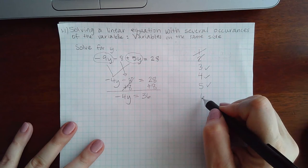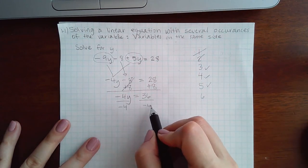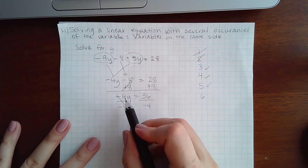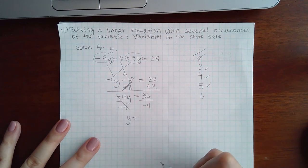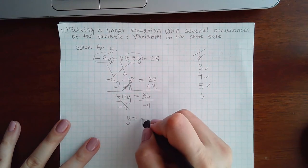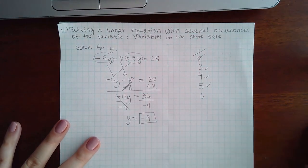Then the last step is to divide by the coefficient. So I'm going to divide both sides by negative 4 so that the entire number and sign cancels, and I end up with just y all by itself. Now 36 divided by negative 4 is negative 9, and that is the answer for this problem.